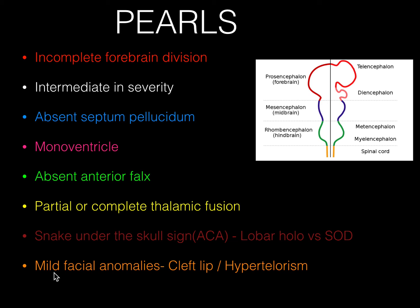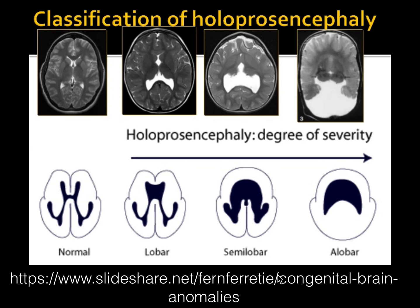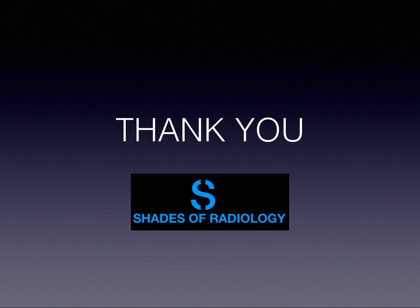Most cases in the holoprosencephaly spectrum are associated with mild to severe facial anomalies such as cleft lip and/or hypertelorism. The overall spectrum ranges from lobar holoprosencephaly, which is the mild variant, to alobar holoprosencephaly, the severe variant, with what we have seen today — semilobar holoprosencephaly — falling in between. Thank you all.